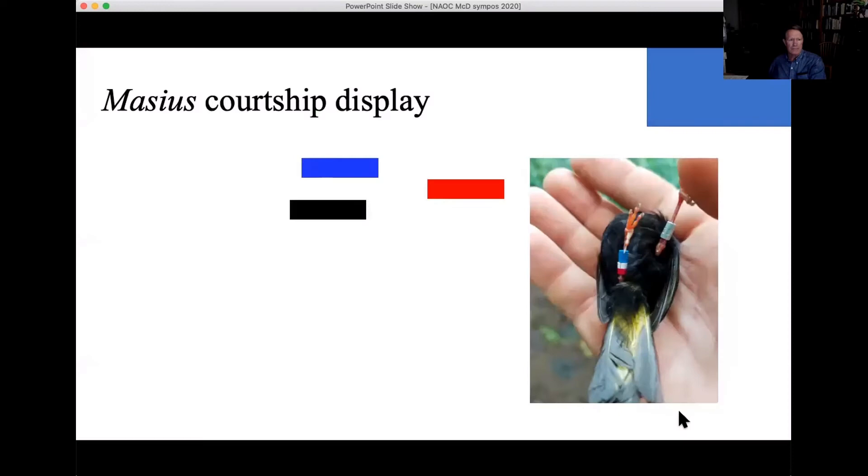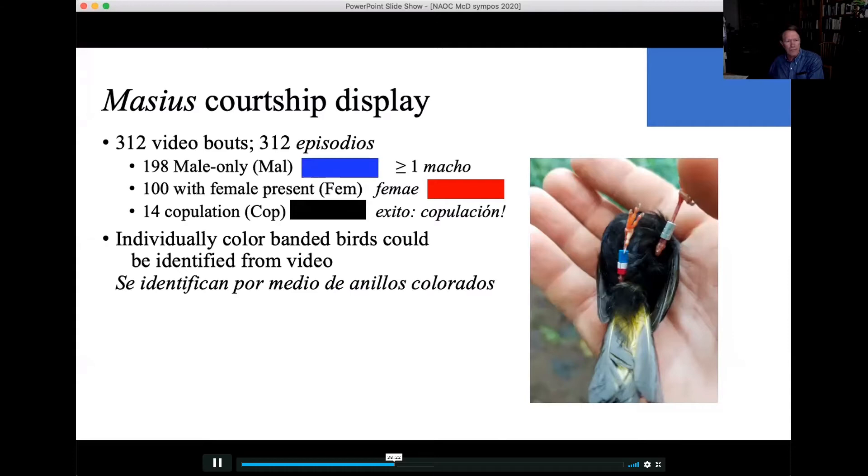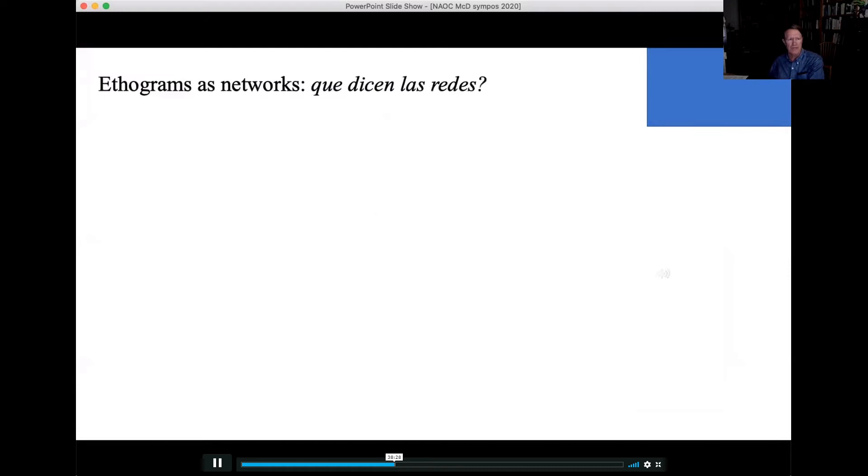So we had 312 video bouts that were suitable, at least 60 seconds long. 198 male-only bouts, one, sometimes more, but usually one male, code those in blue. 100 bouts with females present, code those in red. And 14 bouts with a total of 24 copulations, code those in black. And most of the birds were individually color-banded, so we could identify them from the video.